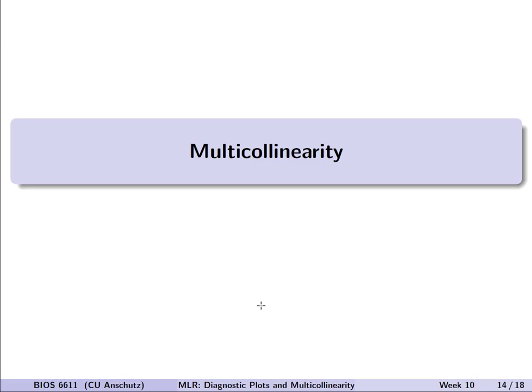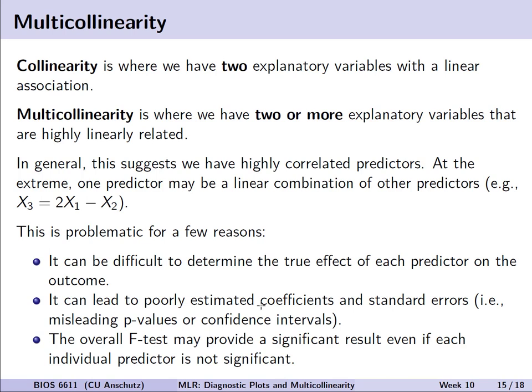So we now have two new tools — partial regression plots and residuals vs. y-hat plots — to visualize data in the context of multiple linear regression. But with multiple predictors also comes the potential challenge of dealing with what we call multicollinearity.